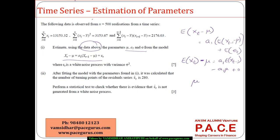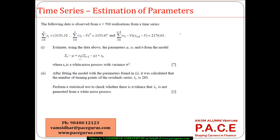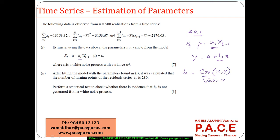This is an AR(1) process — autoregressive process of order 1. The coefficient a1 is the coefficient of the independent variable. In a regular regression y equals a plus bx, the coefficient b is the covariance between x and y divided by the variance of x. Here also, a1 should be the covariance between x_{t-1} and x_t divided by the variance of x_{t-1}.